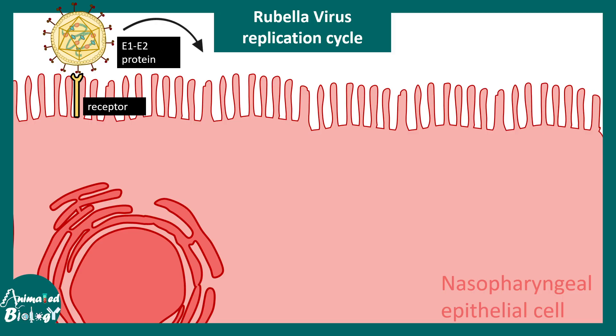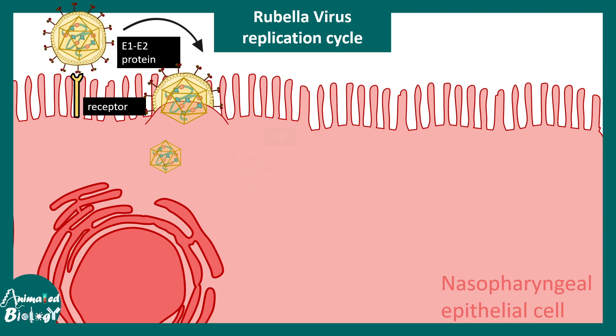This binding leads to the fusion of the membranes of the virus envelope and the cell, which leads to the release of the nucleocapsid into the cytosol. The nucleocapsid eventually releases the ribonucleoprotein and the RNA is freed. Since it's a positive-strand RNA with mRNA-like features such as a cap and poly-A tail, it can be directly transported to the ER and used for protein production, and it will also be replicated to pack more viruses.